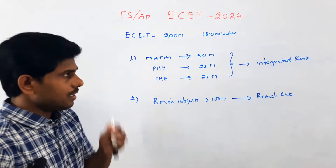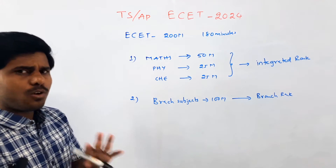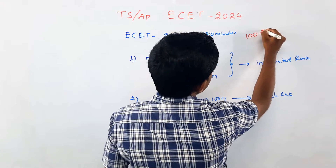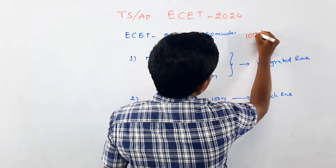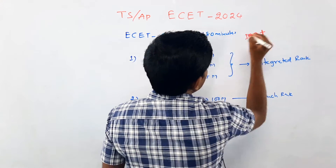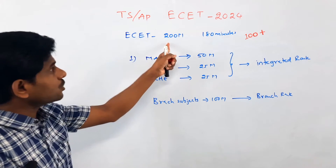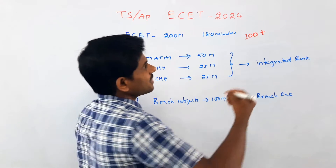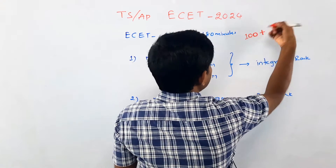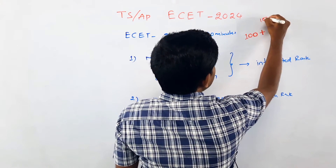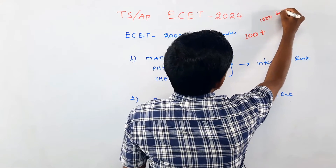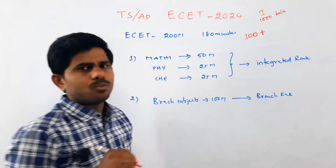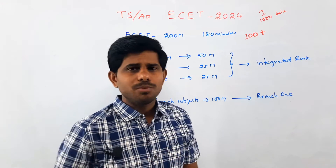Integrator Rank is 150–160 — they are very good. If you have 50–60, you have lower than that. If you want a 100 score, you will make your E-set. If you want 200 marks, 100 score, then you will have 1,000 integrator below. Branch rank 100, 150, 200 below — there is no problem.